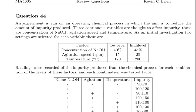This is a factorial design question. An experiment is run on an operating chemical process in which the aim is to reduce the number of impurities produced. Three continuous variables are thought to affect impurity: NaOH, agitation speed and temperature.